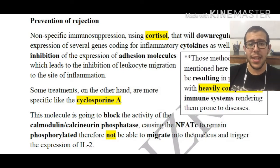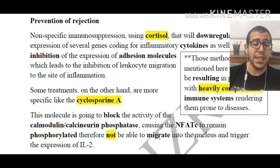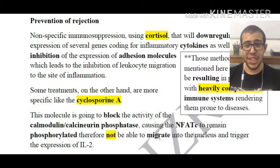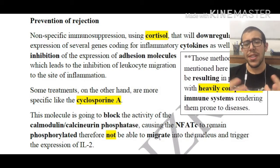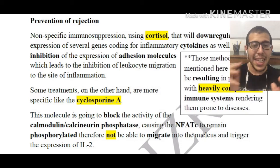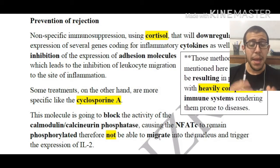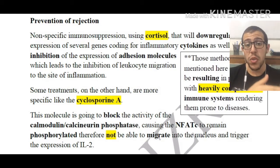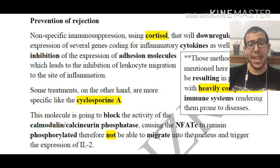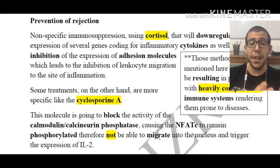First, the cell receives a signal that increases the levels of Ca2+, either from inside the cell via the endoplasmic reticulum or from outside the cell through channels. This elevated level of Ca2+ activates the calmodulin/calcineurin phosphatase. As phosphatases remove phosphate groups, this calcineurin/calmodulin phosphatase removes the phosphate group from NFAT.